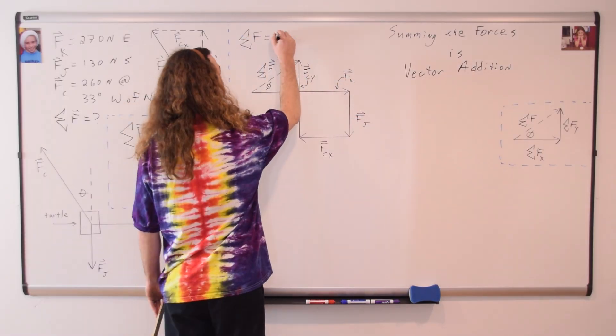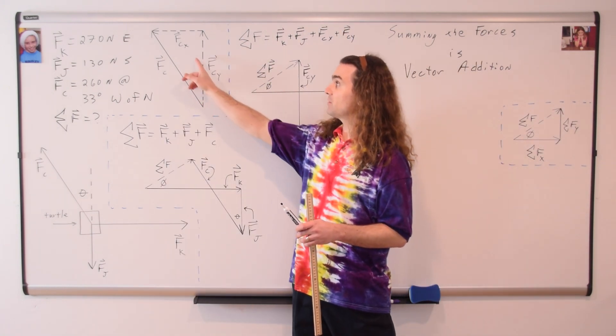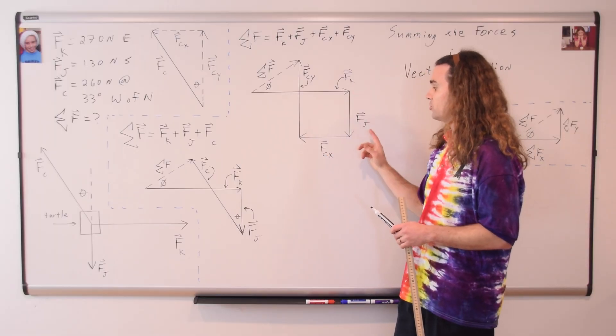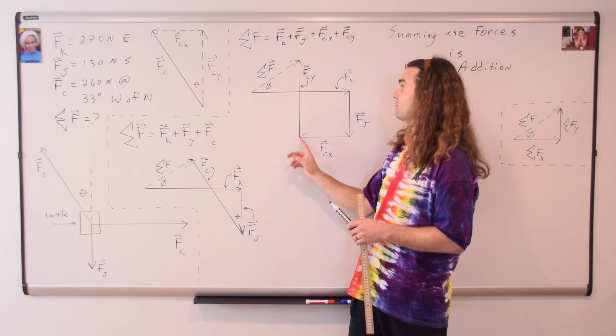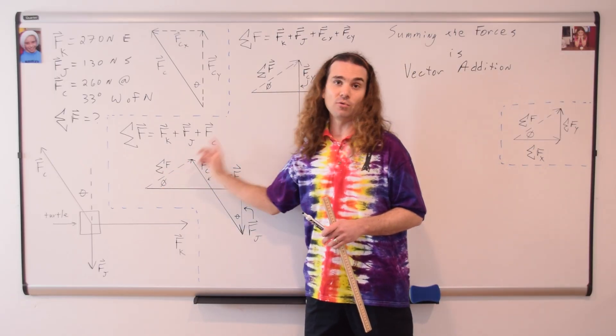We can even do tip to tail vector addition using the components of the force of Chris instead of the force of Chris. So the force of Ken plus the force of Jim plus the force of Chris in the x direction plus the force of Chris in the y direction gives us the same net force.